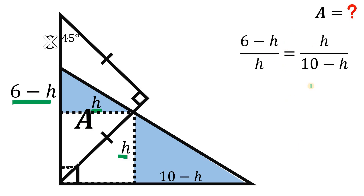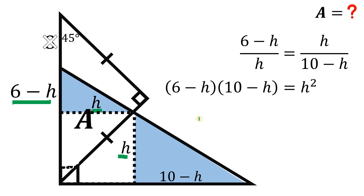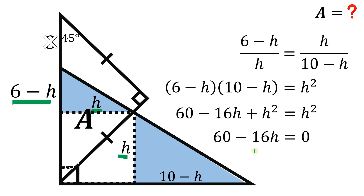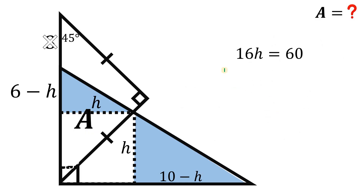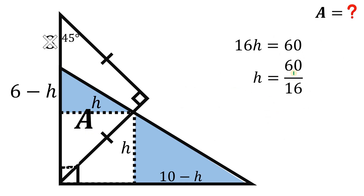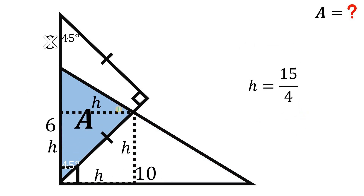We can write: (6 minus h) over h equals h over (10 minus h). Cross-multiplying gives (6 minus h)(10 minus h) equals h squared. Expanding the left side: 60 minus 16h plus h squared equals h squared. Subtracting h squared from both sides: 60 minus 16h equals 0, which simplifies to 16h equals 60. Dividing both sides by 16 gives h equals 15 over 4.